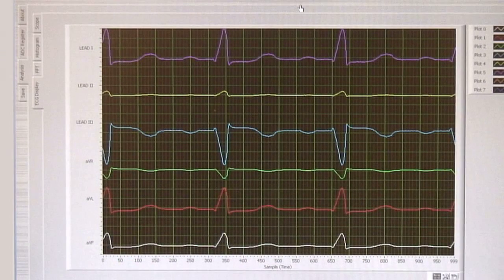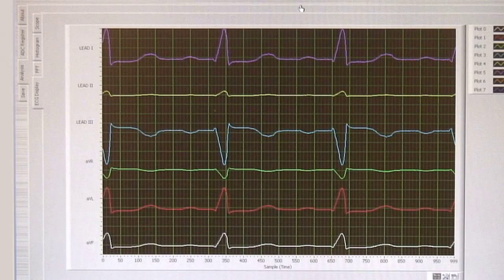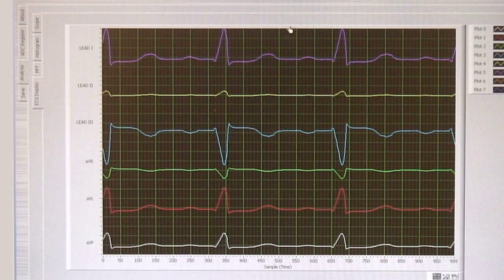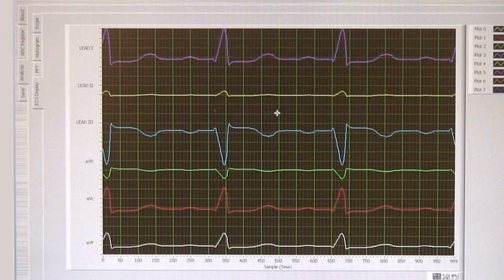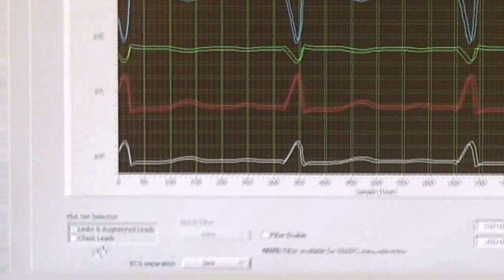And there you are. The primary and augmented leads are shown in this graph and a radio button selector at the bottom of the graph switches the display to the chest leads.